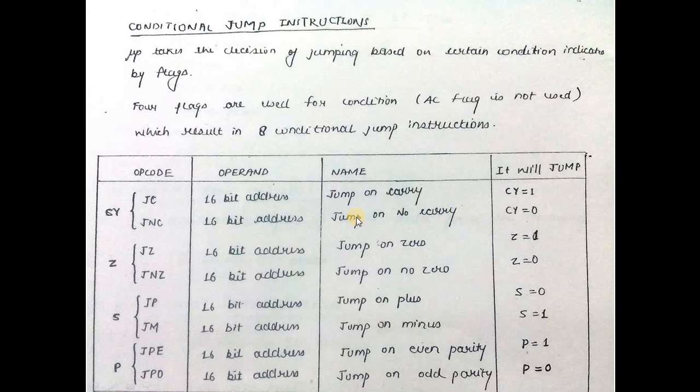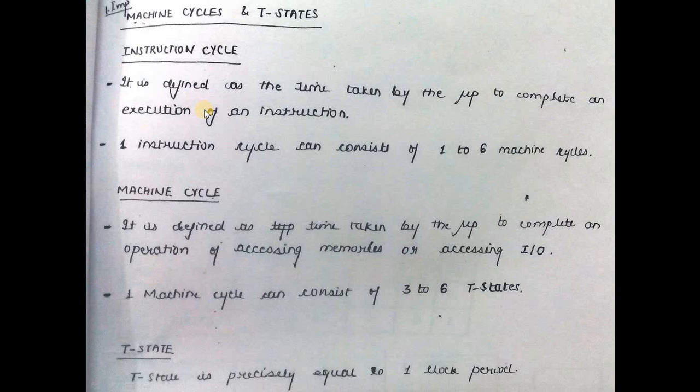Conditional jumps: JC (jump on carry), JNC (jump on no carry), JZ (jump on zero), JNZ (jump on no zero), JP (jump on plus), JM (jump on minus), JPE (jump on even parity), JPO (jump on odd parity). You need to remember what each means and the effect on carry flags.